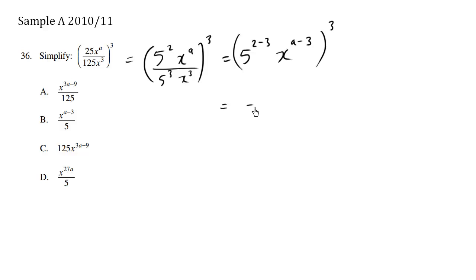So let's rewrite it as follows. This is going to be 5 to the negative 1, x to the a minus 3, all to the 3.